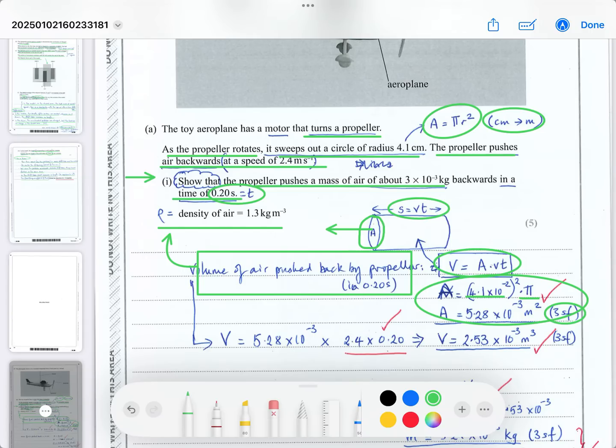you can work out how far it goes in 0.20 seconds using the speed of 2.4 m/s. This gives the cylinder length. Multiply the area by the length S = VT to get the volume of 2.53×10⁻³ m³ to three significant figures.